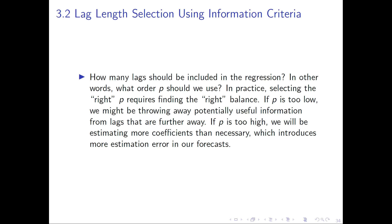When considering autoregressive models, one of the major problems is deciding on the lag length. If you have the number of lags on the x-axis and root mean squared forecast error on the y-axis, then if you include too few lags, you get a quite high root mean squared forecast error, making your forecasts less accurate.